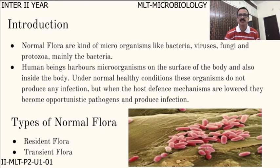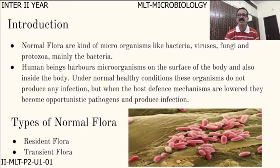Coming to the introduction to the normal flora: normal flora consists of microorganisms like bacteria, viruses, fungi, and protozoa — mainly bacteria. Human beings harbor microorganisms on the surface of the body and also inside the body. Under normal healthy conditions, these organisms do not produce any infection, but when the host defense mechanisms are lowered, they become opportunistic pathogens and produce infection.